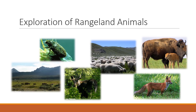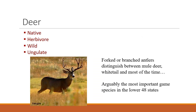Next, I'm going to go through a host of animals that we'll use as examples in class — a brief overview of animals that are important on rangelands. Deer are really important herbivores on rangeland. They are arguably the most important game species in the lower 48, and hunting provides much recreational enjoyment for many people in the U.S. They're native, herbivores, wild, and ungulates. The ones we'll talk about most are mule deer and white-tailed deer.